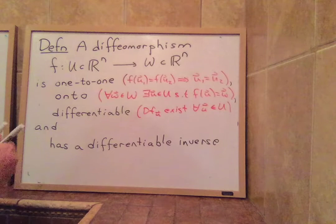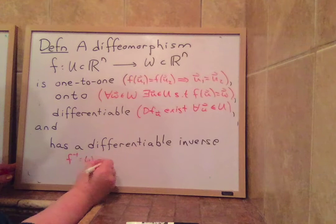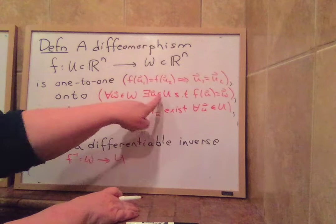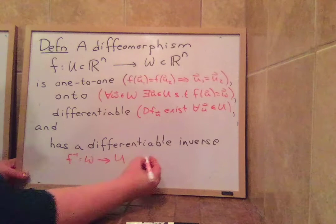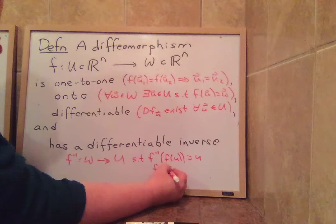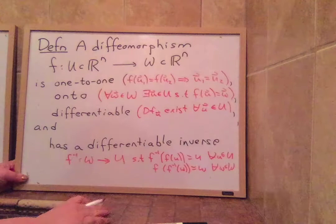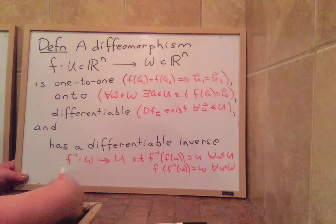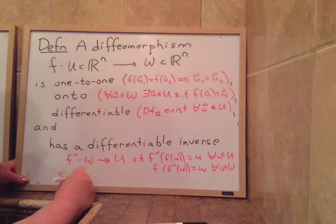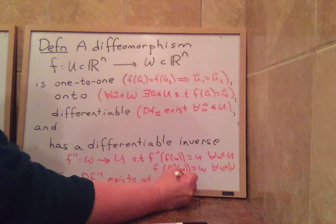And finally, it has a differentiable inverse. Now an inverse is the map f inverse, the map that goes back from w to u. Such an inverse is defined because every single output has an input and has exactly one input. So there is this f inverse from w to u such that f inverse of f of u equals u and f of f inverse of w equals w. This is for all u's in U and for all w's in W. We're saying this guy, which we know exists from the one-to-one and onto, he is not just existing, but he is differentiable. So df inverse exists at every w in W.